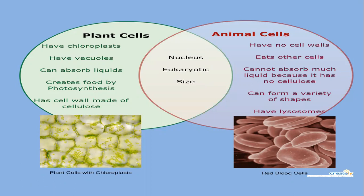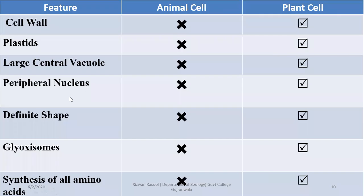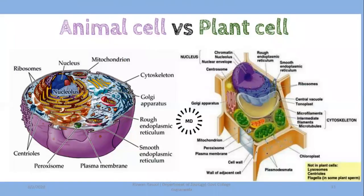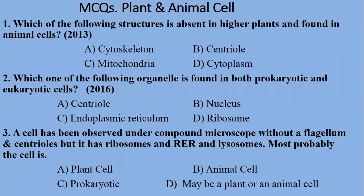Plant cells have chloroplasts and vacuoles, create food by photosynthesis, and have a cell wall made of cellulose. Animal cells have no cell wall, cannot absorb as much liquid, can form a variety of shapes, and have lysosomes. Animal cells cannot handle internal hydrostatic pressure as well as plant cells, because plant cells have a rigid cell wall to withstand turgor pressure.